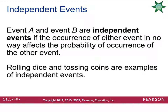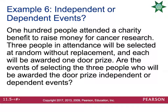Independent events: events A and B are independent if the occurrence of either event in no way affects the probability of the other. For example, rolling a die and tossing a coin are independent events — whatever you roll has no impact on what you toss. The previous example of drawing cards without replacement is a dependent event, because what you draw first does affect what you can draw second.